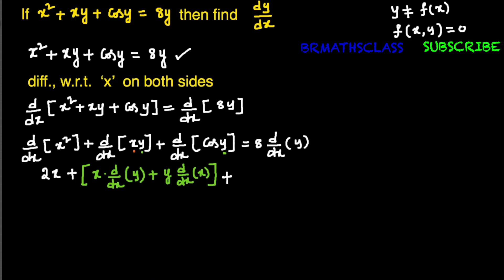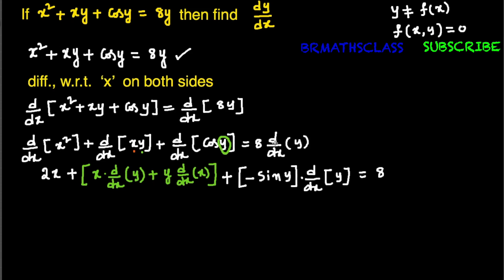For d/dx of cos y — the given function is in terms of y but we are differentiating with respect to x. Imagine y as x: d/dx of cos x is −sin x, so d/dx of cos y is −sin y into dy/dx. Completing the right-hand side, 8 into d/dx of y is 8 · dy/dx.